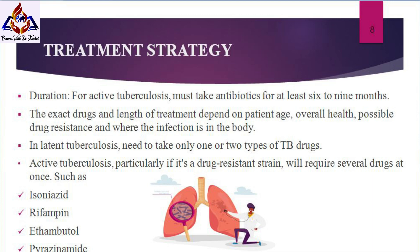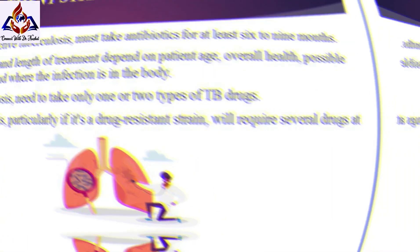If you have latent tuberculosis, you might need to take only one or two types of TB drugs. Active tuberculosis, particularly if it is a drug-resistant strain, will require several drugs at once. The most common medications used to treat tuberculosis include isoniazid, rifampin, ethambutol, and pyrazinamide.